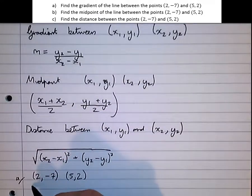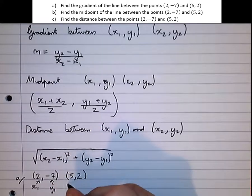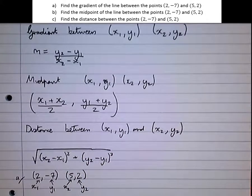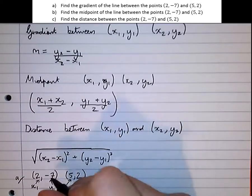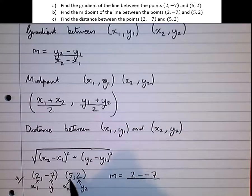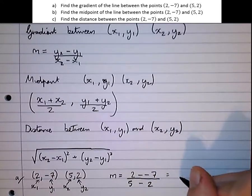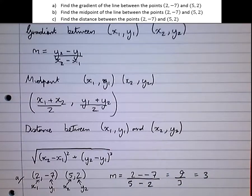Well we're going to make this our x₁. That's our x₁. This is our y₁. This is our x₂. And this is our y₂. So let's just sub them in the formula. The gradient equals y₂ minus y₁, 2 minus minus 7, over x₂ minus x₁, over 5 minus 2, which is 9 over 3, which is 3. And that's that one done. We've found the gradient of the line that joins those two points.